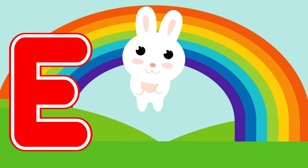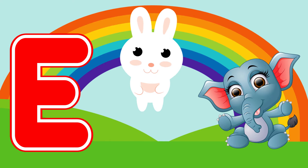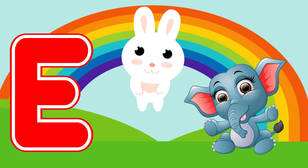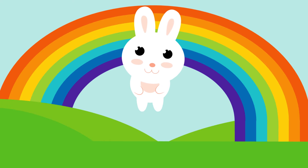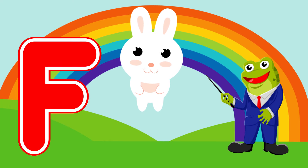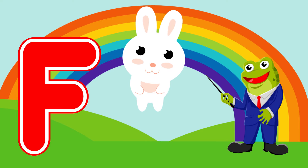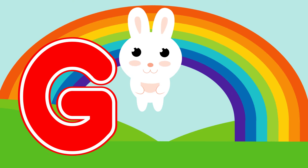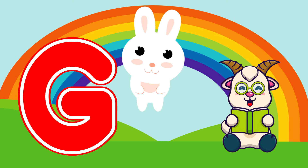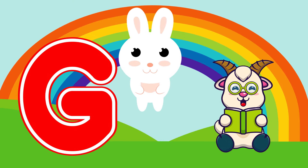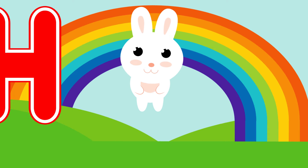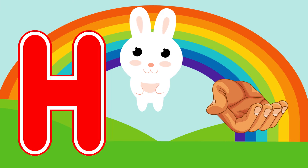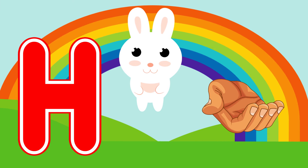E is for elephant, e-e-elephant. F is for frog, f-f-frog. G is for goat, g-g-goat. H is for hand, h-h-hand.